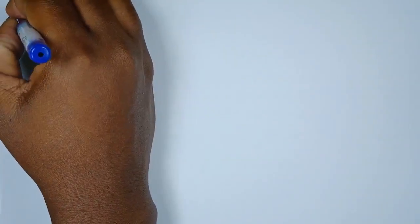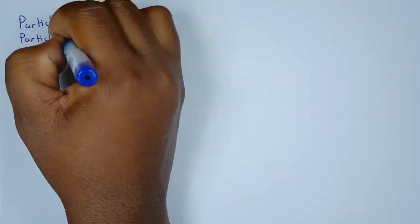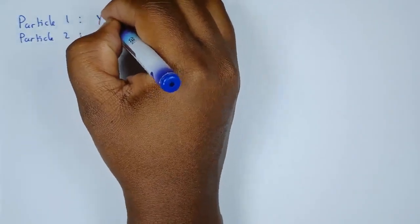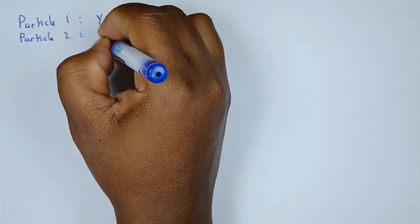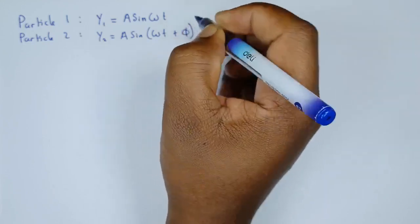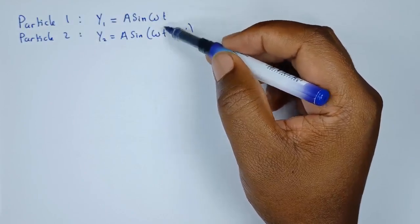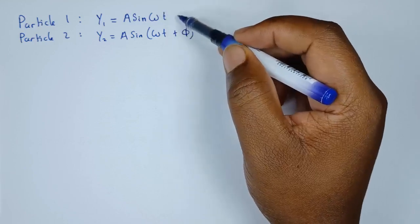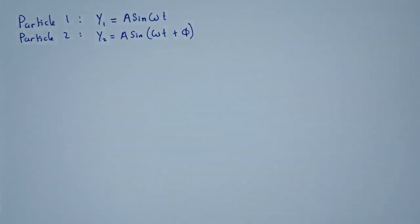We have two particles: particle one and particle two. We're going to give them the formula for simple harmonic motion. Particle one: y1 = A sin(ωt). Particle two: y2 = A sin(ωt + φ). Particle one doesn't have φ because we're finding the difference between the two — if we set particle one's phase to zero, then φ is exactly the phase difference we're looking for.